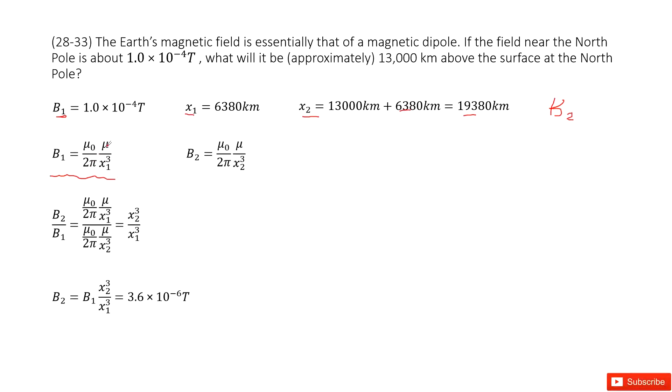So μ0 divided by 2π, this μ is magnetic dipole. This is the distance from the position to the dipole center, right?